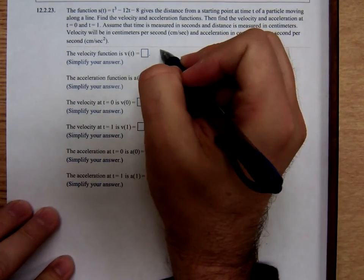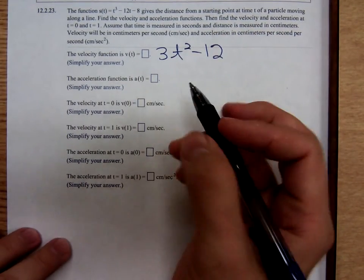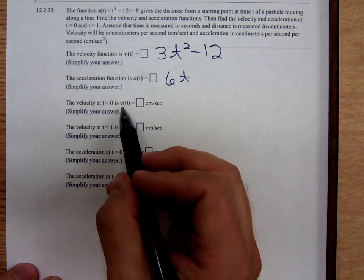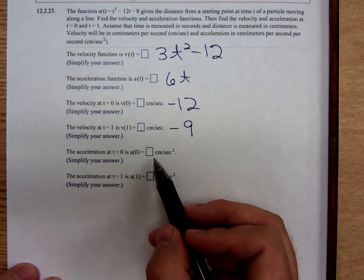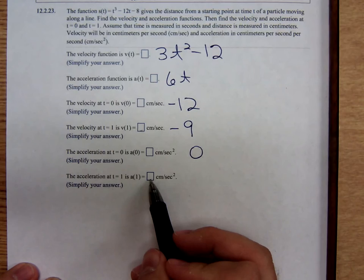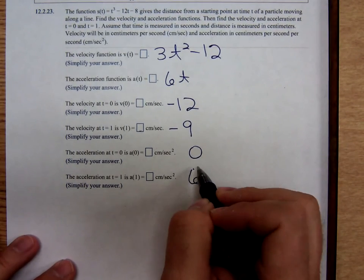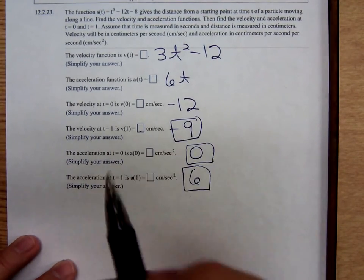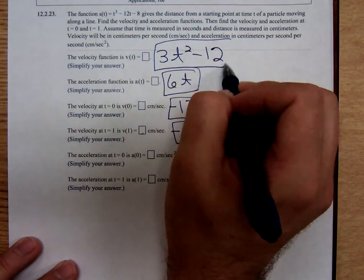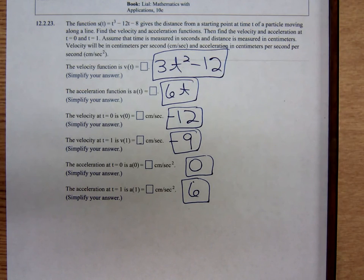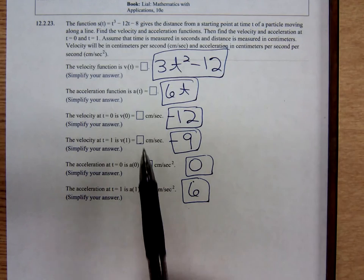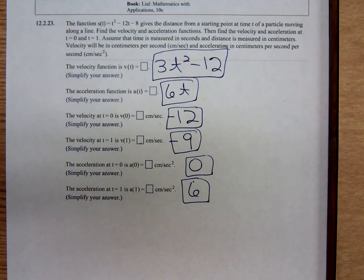Coming back to the problem: the velocity function is 3t^2 - 12. The acceleration function is 6t. The velocity at t = 0 was negative 12. The velocity at t = 1 was negative 9. The acceleration at 0 was 0, and the acceleration at 1 was 6. They've already taken care of the units for us, so we don't have to type in centimeters per second for velocity or centimeters per second per second for acceleration. Once again, this is Timothy Purcell, and I was just doing some business calculus for my business calculus class. Bye-bye.